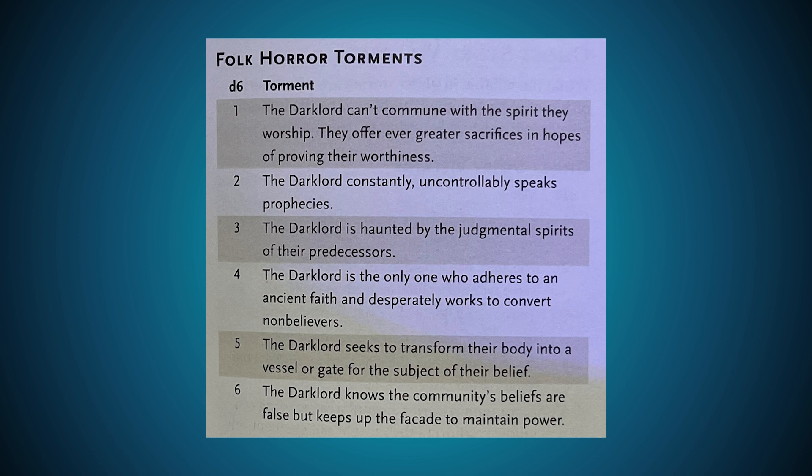The folk horror torments list is a D6: the dark lord can't commune with the spirit they worship and offers even greater sacrifices to prove worthiness; the dark lord constantly and uncontrollably speaks prophecies; the dark lord is haunted by the judgmental spirits of their predecessors; the dark lord is the only one who adheres to an ancient faith and desperately works to convert non-believers; the dark lord seeks to transform their body into a vessel for the subject of their belief; the dark lord knows the community's beliefs are false but keeps up the facade to maintain power. I really like the idea of them being almost a charlatan, but I also really like the idea of their belief being real and them failing to stay in touch with it.